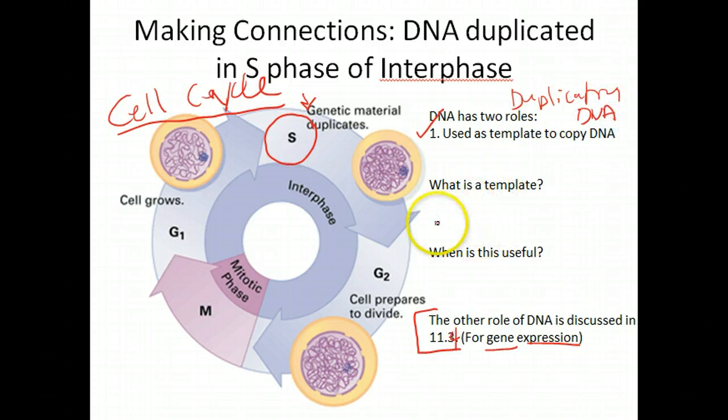So making DNA from DNA. So what is a template? A template is basically something that you work off of to make a copy of something. So let's say, for example, if you were copying text from a textbook, right? You would use your book as a template and you would type out the exact words in that book word for word. So that would be a template basically. When is this useful? Well, we just talked about that. Literally, DNA duplication occurs in S phase of interphase, which we saw when we were talking about the cell cycle.